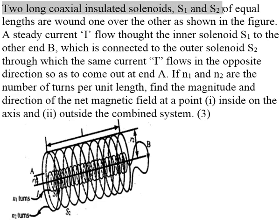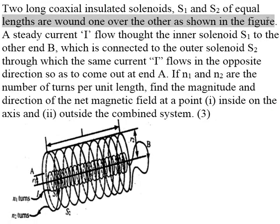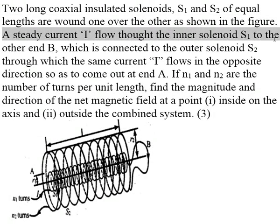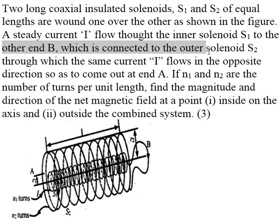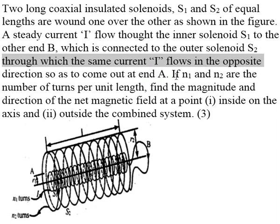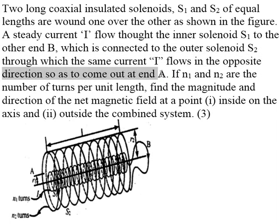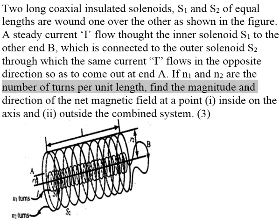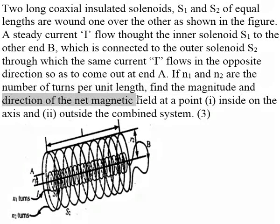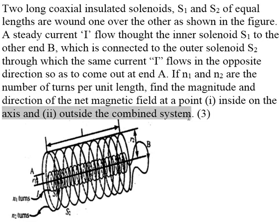Two long co-axial insulated solenoids S1 and S2 of equal lengths are wound one over the other. A steady current I flows through the inner solenoid S1 to end B, which is connected to outer solenoid S2, through which the same current I flows in the opposite direction to come out at end A. If N1 and N2 are the number of turns per unit length, find the magnitude and direction of net magnetic field at a point on the axis and outside the combined system.